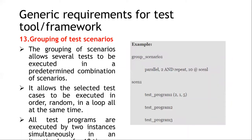The next requirement is grouping of test scenarios. This allows several test cases to be executed in combination — in order, randomly, or in a loop, all at the same time. For example, 'group scenario_1' with 'parallel,2' creates two instances of the actions that follow. Combined with 'and repeat,10', it executes scenario 1 ten times in a loop. Scenario 1 is defined with test program 1, test program 2, test program 3, and test program 1 with specific test cases 2, 1, and 5. Two instances of the given scenario are created and the scenario is executed 10 times.